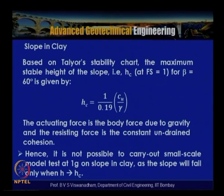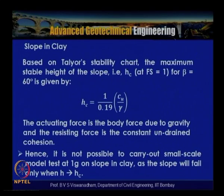From Taylor's stability chart, the maximum stable height at factor of safety 1 for beta equal to 60 degrees shows that the actuating force is body force due to gravity and the resisting force is constant undrained cohesion. The slope will only fail if h tends to h_c. If the slope is prepared at 1/n scale in the laboratory, it will have a very high factor of safety due to its small physical dimensions. Therefore, centrifuge model testing is warranted for understanding stability of a slope in undrained clay.